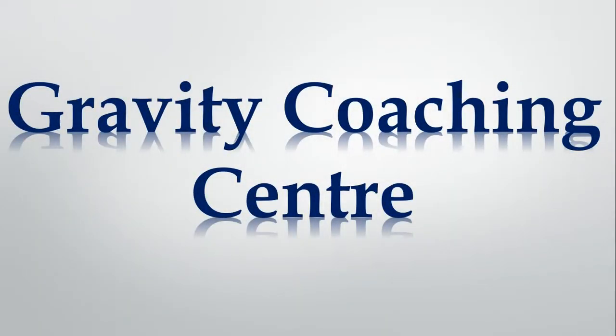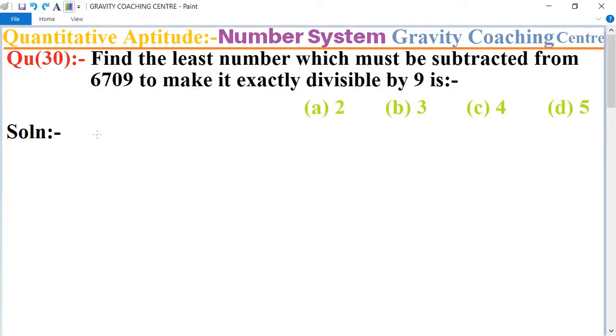Welcome to our channel Gravity Coaching Centre and Quantitative Aptitude chapter Number System. Question number 30: Find the least number which must be subtracted from 6709 to make it exactly divisible by 9.